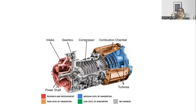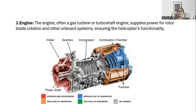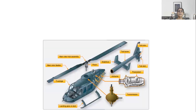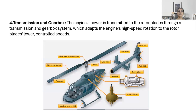The next component is the engine. This turboshaft engine supplies power to the rotor blade and all other on-board systems, which helps in the working of the helicopter. Next is the tail rotor — a tail rotor counteracts the torque generated by the main rotor. After that is the transmission or gearbox, which is basically a connection between the engine and the rotor blades. It delivers power from the high-speed engine to the controlled rotation that happens in the rotor blade.